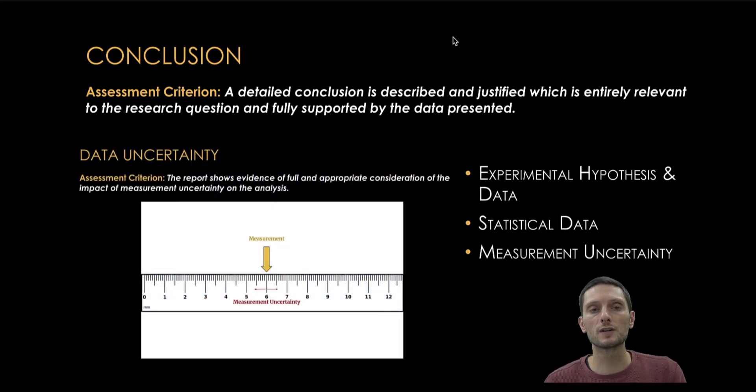The last portion of the conclusion section is the assessment of measurement uncertainty. This ties into the analysis criterion, which is discussed in another video. Measurement uncertainty really focuses on each time you take a measurement, there's going to be a bit of uncertainty in that measurement. If you were to take a measurement 10 times, probably each of those 10 different times you're going to have a slightly different measurement.